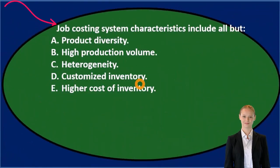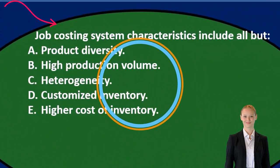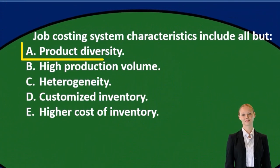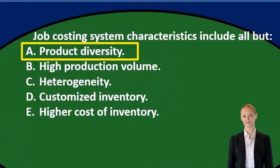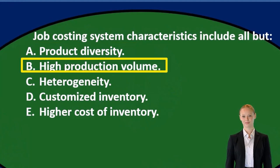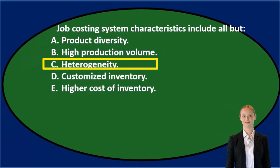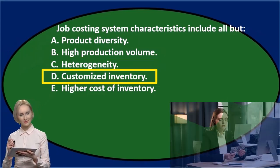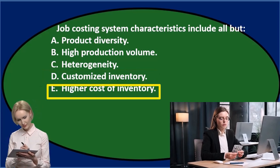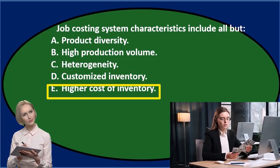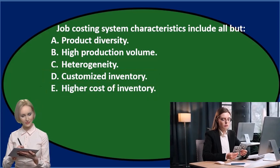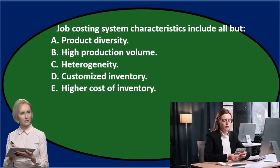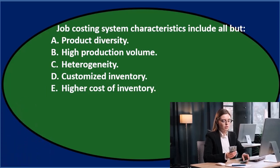Job costing system characteristics include all but: A) product diversity, B) high production volume, C) heterogeneity, D) customized inventory, and E) higher cost of inventory. We'll go through this and use the process of elimination.